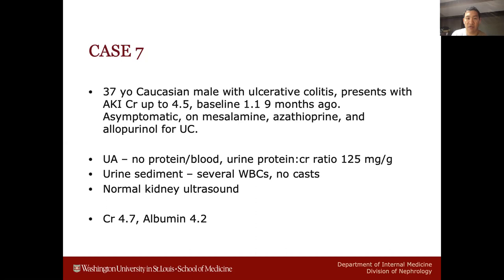Let's have Sana start with this one. A 37-year-old Caucasian with ulcerative colitis presenting with AKI, on mycelamine, AZA, and allopurinol. UA without protein or blood, urine protein-to-creatinine ratio of 125, several WBCs, no casts, normal ultrasound. If there are a lot of WBCs, maybe interstitial nephritis.